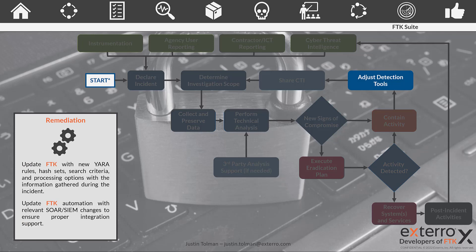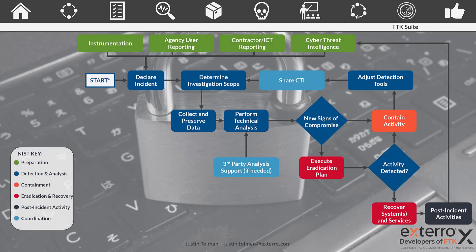Once we've isolated, contained, and eradicated, we need to adjust our tools to make sure we're prepared for that attack and can perform a proper scan of our network with what we've learned. We're going to update FTK with new YARA rules, hash sets, and any search criteria to compensate for this type of attack. FTK makes it really easy to import new YARA rules, so as you build some based on newly detected signs of compromise, you can get those back into your tool quickly. You also want to update FTK's automation and integration with your SOAR and SIEM implementations using the simple graphical user interface. Once you've adjusted all your tools and you're back to the new normal, you're ready for the next attack — which we all know will come — and then we run through this cycle again.